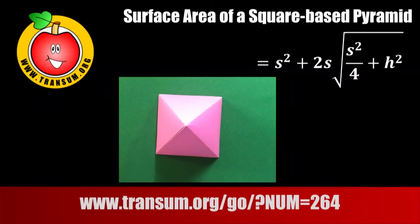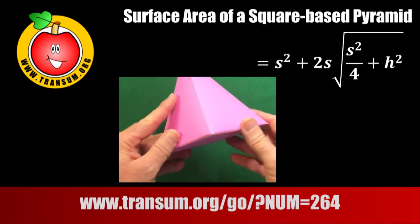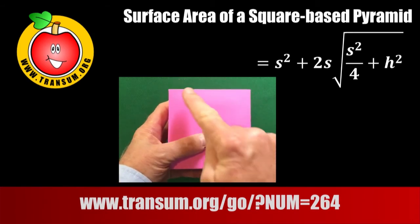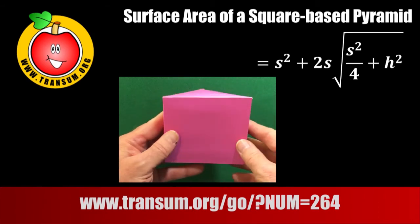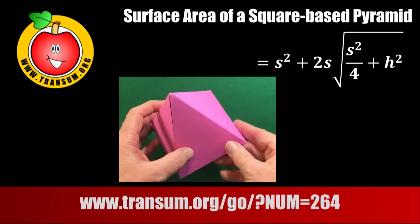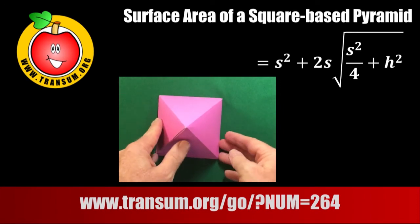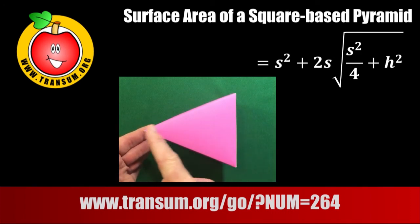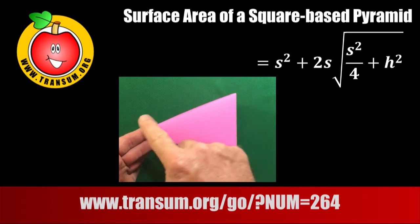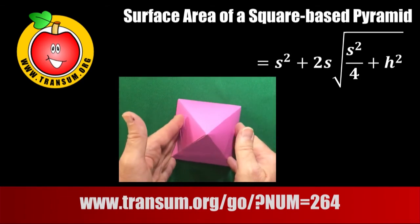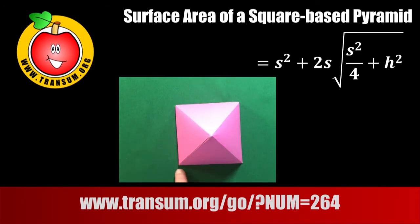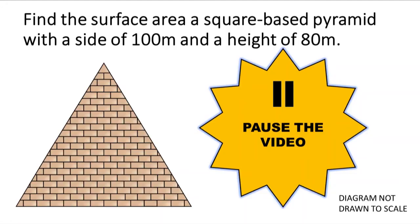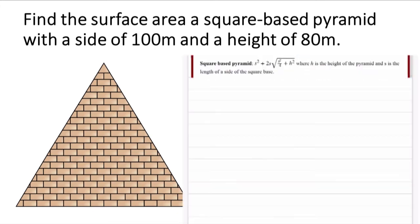Now, pyramids come in all shapes and sizes, but this formula here is for a square-based pyramid. And we'll say that the sides of the square are each of length s and h is the perpendicular height above the base. So don't get confused with the sloping height. It's definitely the distance from the base directly up to the apex there. So pause the video and have a go at this question here. And then start the video again to see if you get the same answer as me.